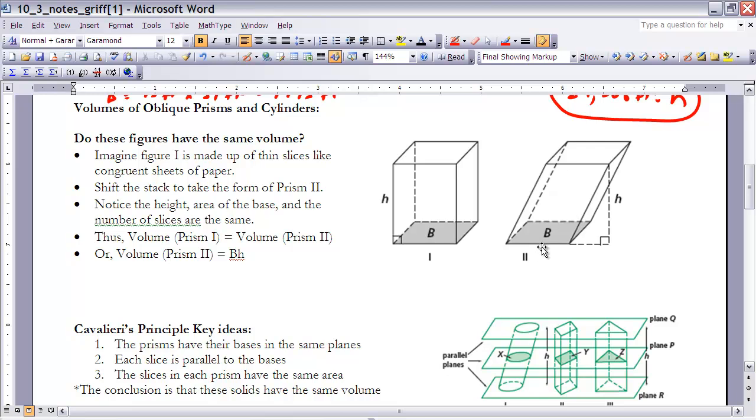And if we shift that stack of thin slices and we make a picture like two, where we've just kind of slanted it off to the side, notice that the height and the area of the base would be still exactly the same. It's just that we've had it slanted over here. So here's my height now measured over here as opposed to measured perpendicular to the base.